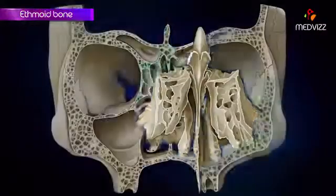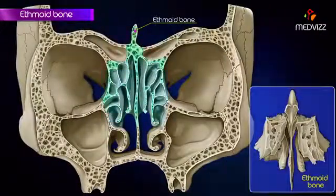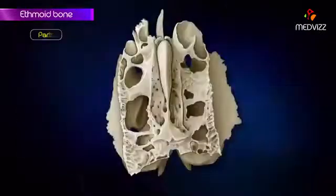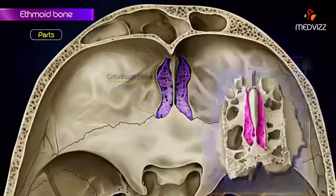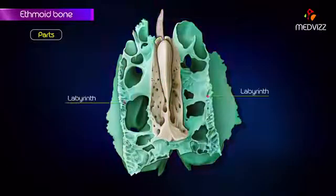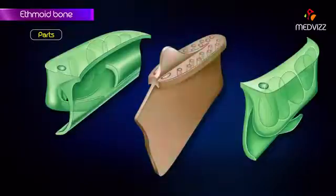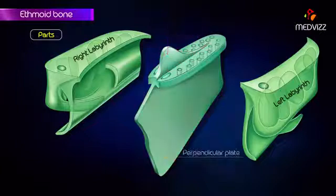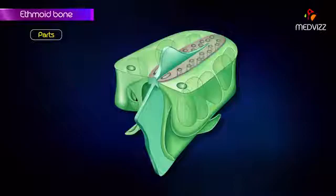The ethmoid bone is an unpaired fragile bone located between the two orbital cavities. It consists of the following parts: the cribriform plate, crista galli, perpendicular plate, and two labyrinths. It has a median vertical plate and right and left labyrinths. The median plate is divided into the crista galli and the perpendicular plate, and is connected to the labyrinth by the cribriform plate.